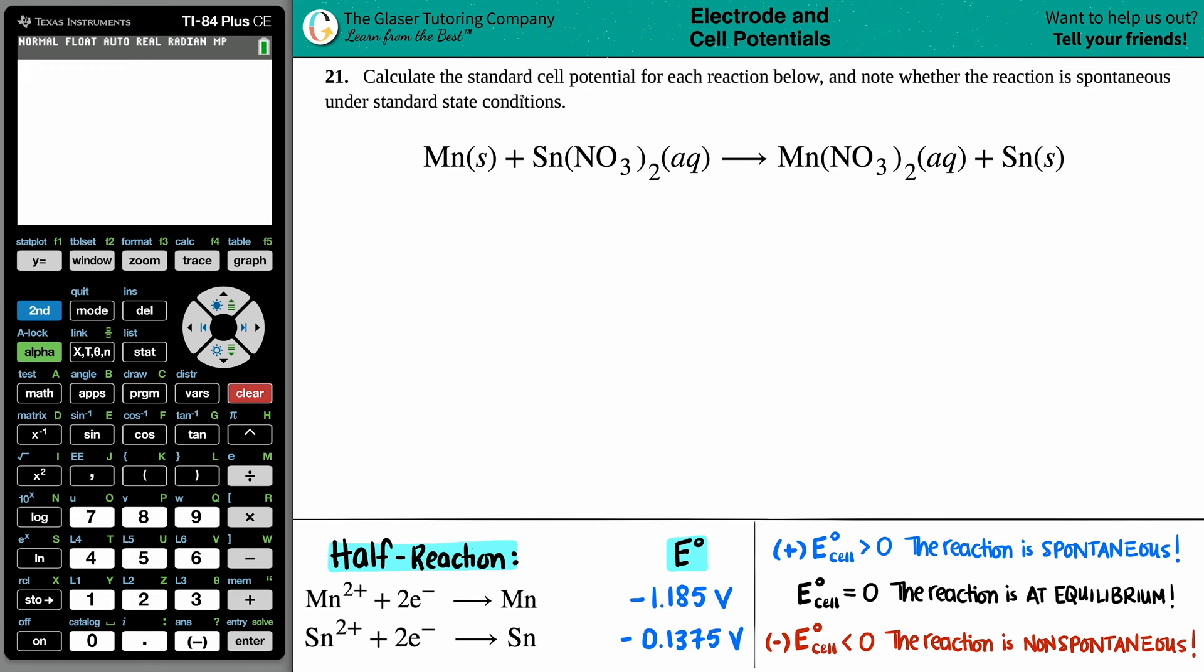Number 21. Calculate the standard cell potential for each reaction below and note whether the reaction is spontaneous under standard state conditions. All right, so we have our equation here. We have Mn solid plus Sn(NO3)2 aqueous yields Mn(NO3)2 aqueous plus Sn solid. And we want to find out what that standard cell potential is.